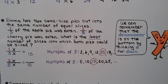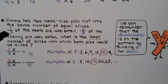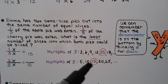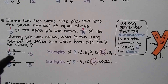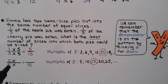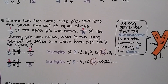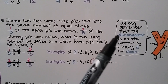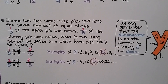Emma has two same-size pies cut into the same number of equal slices. One-third of the apple pie was eaten and two-fifths of the cherry pie was eaten. What is the least number of slices into which both pies could have been sliced? We have denominators 3 and 5. Writing multiples of 3 and multiples of 5, we see they meet at 15. Three times five equals 15, so we multiply the numerator by 5, giving us five-fifteenths. Five times three equals 15, so we multiply the numerator by 3, giving us six-fifteenths. If you have trouble remembering which is the numerator and which is the denominator, remember: denominator starts with a D, which stands for down — the bottom number is the denominator.